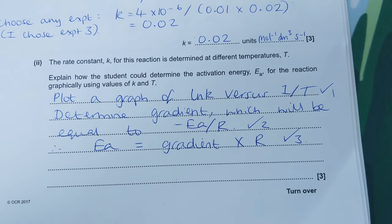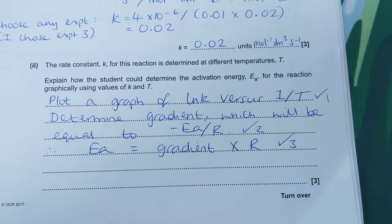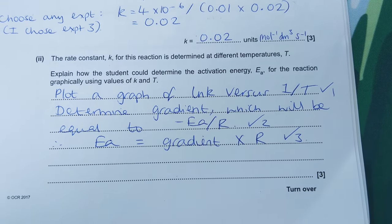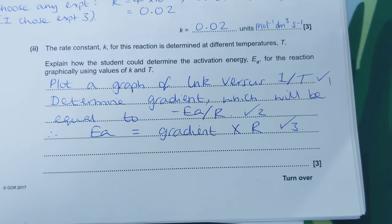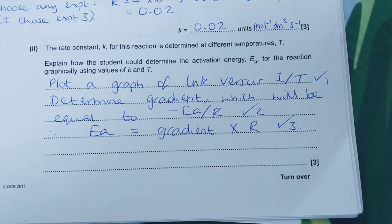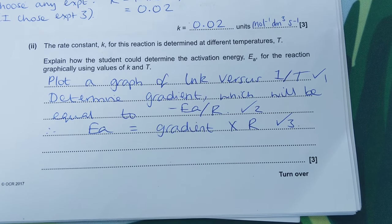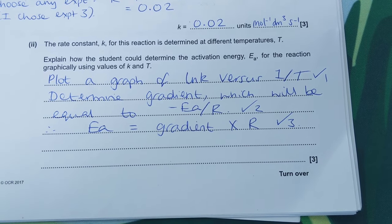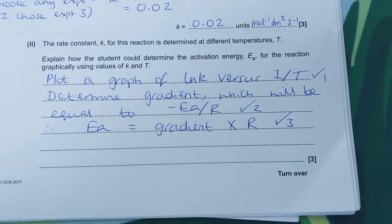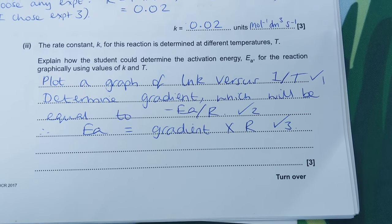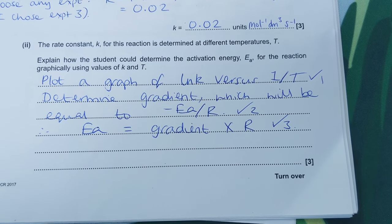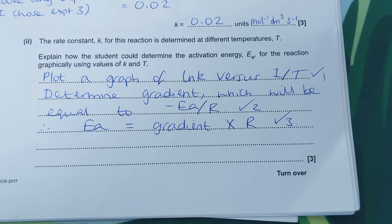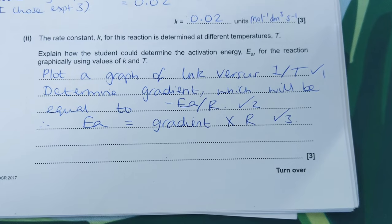The rate constant is determined at different temperatures. To find activation energy graphically using values of k and T, you plot an Arrhenius graph of lnk (natural log of the rate constant) versus 1/T. Then find the gradient, which equals minus activation energy over the gas constant — the negative is because the slope is downward. Finally, multiply the gradient by the gas constant to get activation energy.